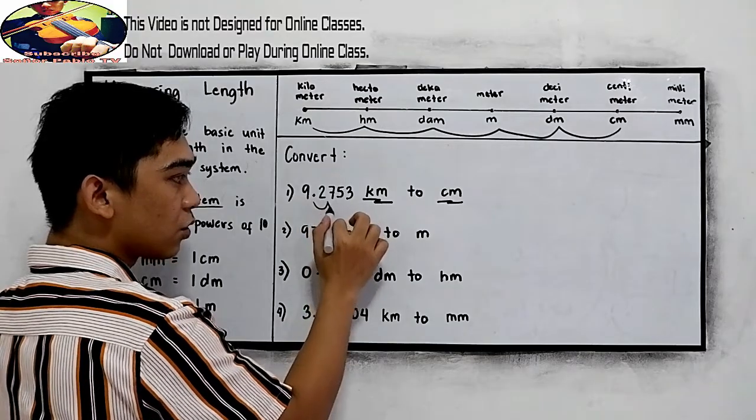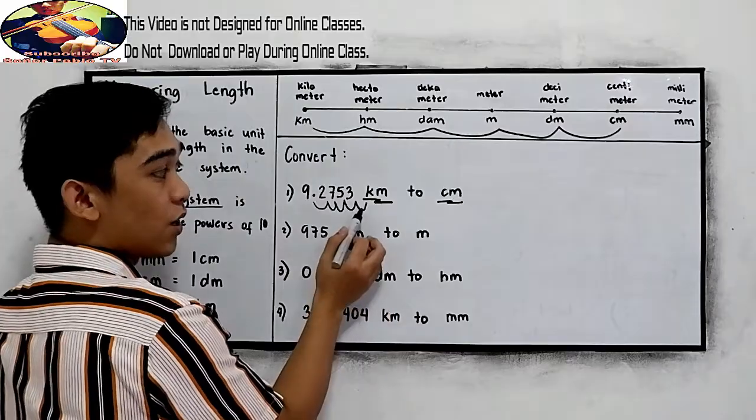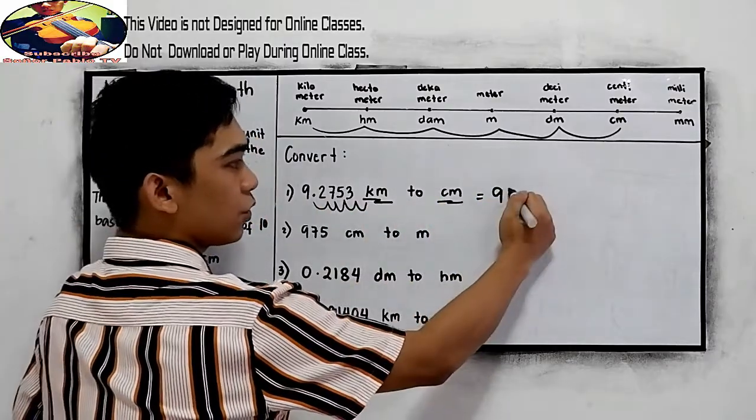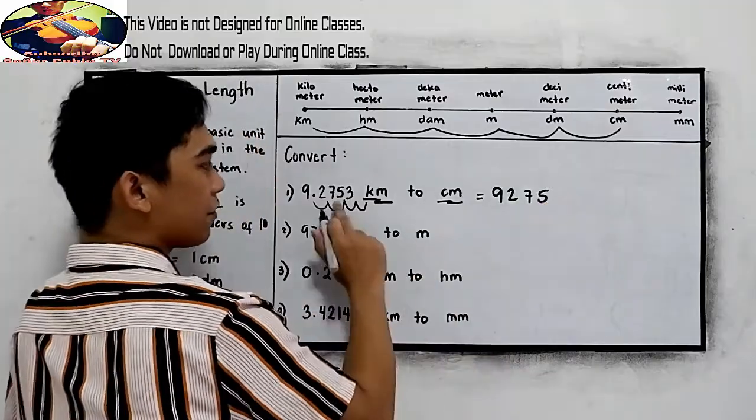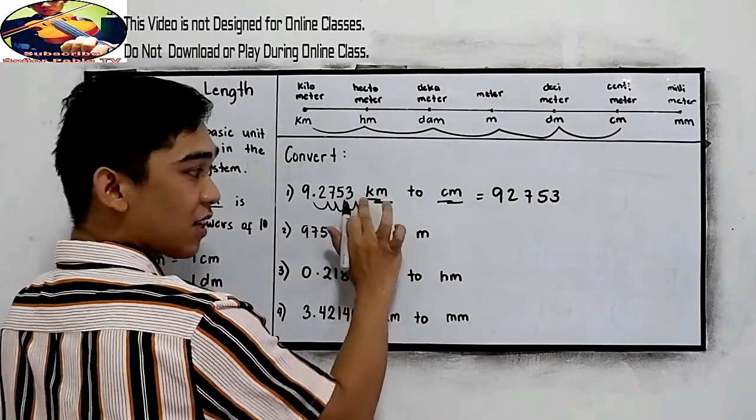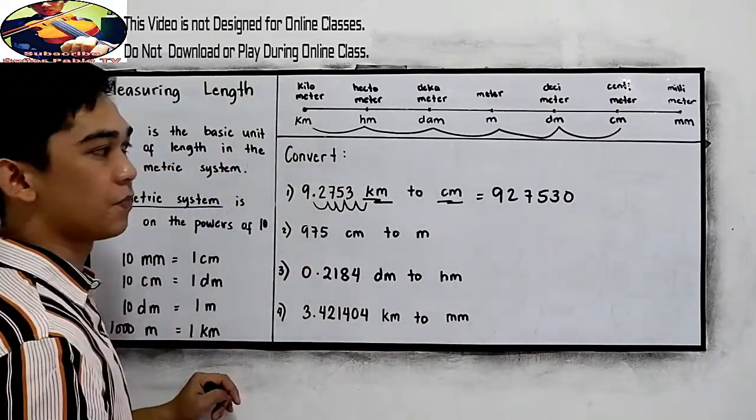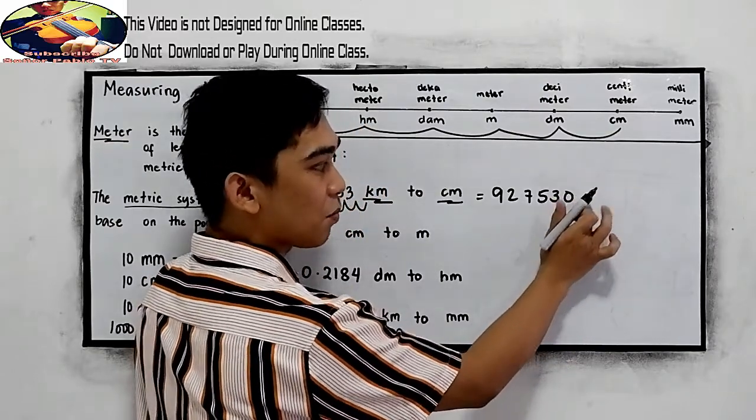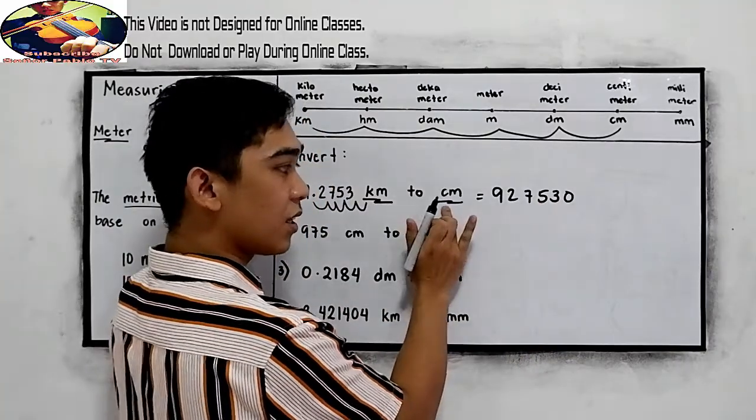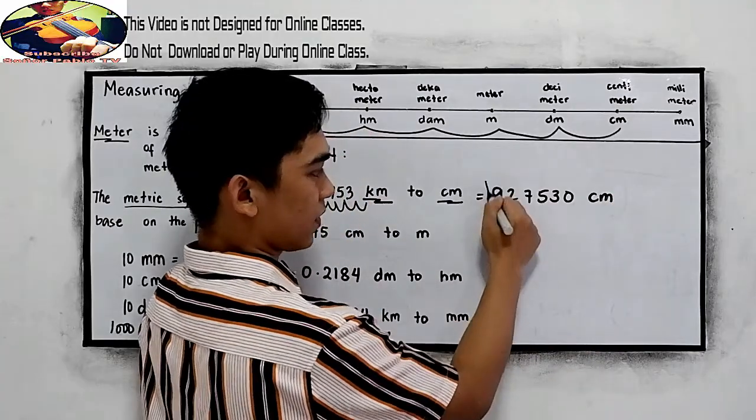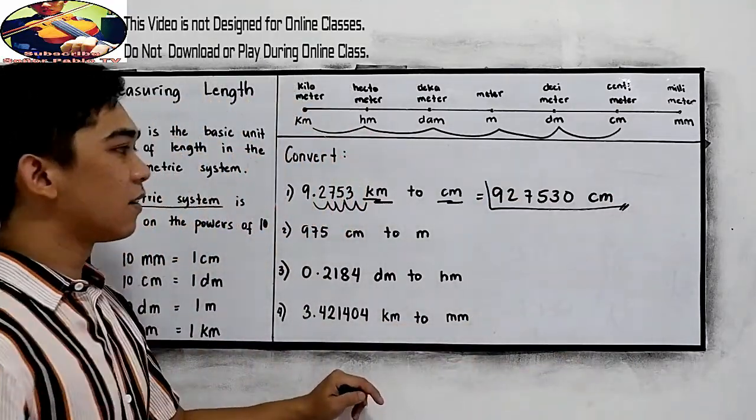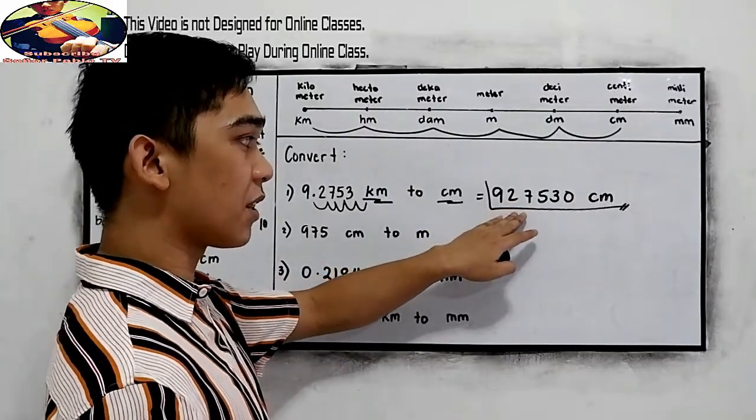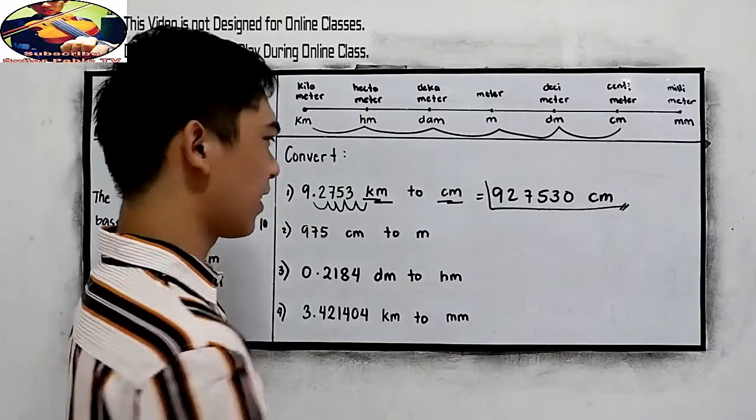Move 5 times: 1, 2, 3, 4, 5. We have an excess here, so we can write that as 927530. And we have excess, we will write 0 on that. Understood that our decimal point is located here. It's okay not to write our decimal point, because this is a whole number now. So, our unit is cm. That means 9.2753 kilometers is equal to 927,530 centimeters.